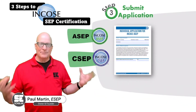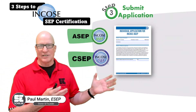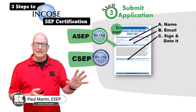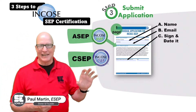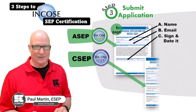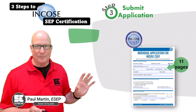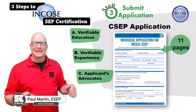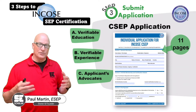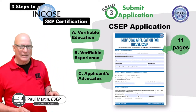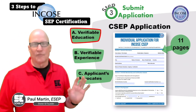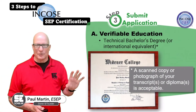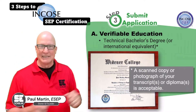There are two types of application. There's the ASEP — the Associate Systems Engineering Professional. It's a one-page form: fill out your name, email, sign it, date it, give them the money, and you become an ASEP. The CSEP is more complicated because it's 11 pages and they ask you to verify your education and experience and provide references or advocates to show your experience is real. From an education standpoint, they want you to photograph your diploma or transcript to show you did go to school. If you don't have a technical degree, they give you the ability to use more experience to compensate — the website will tell you the criteria.